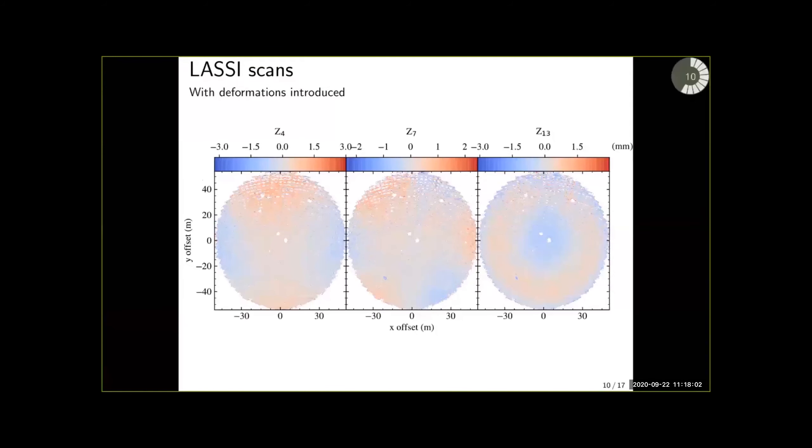What I'm showing now is again differences between scans but in this case we have introduced deformations using the active surface. Since we can command the active surface we can introduce deformations that resemble what we will encounter during an observation and we can use these to characterize the instrument.